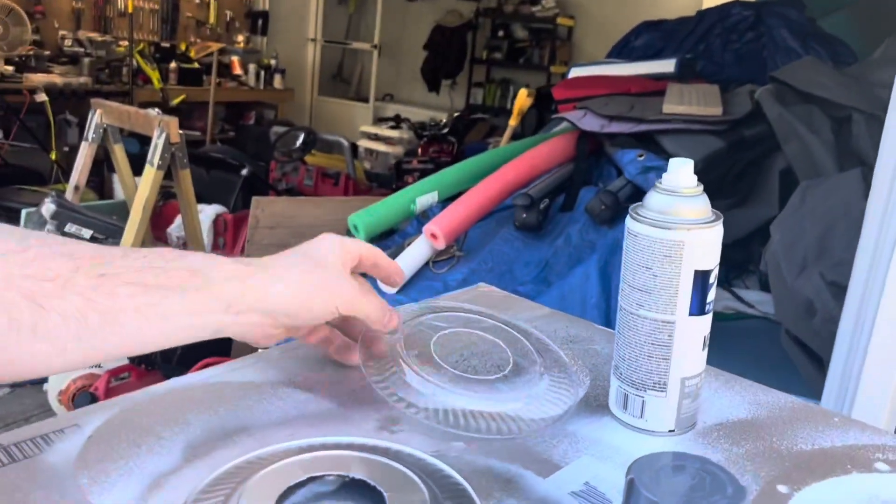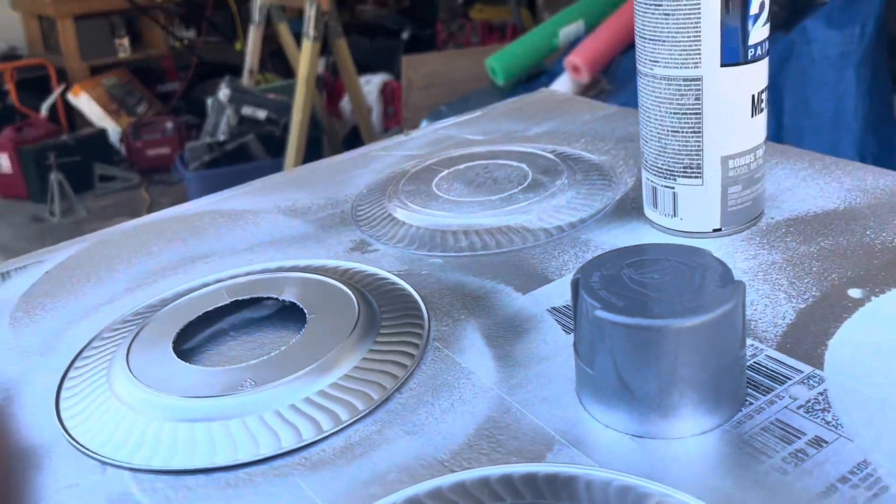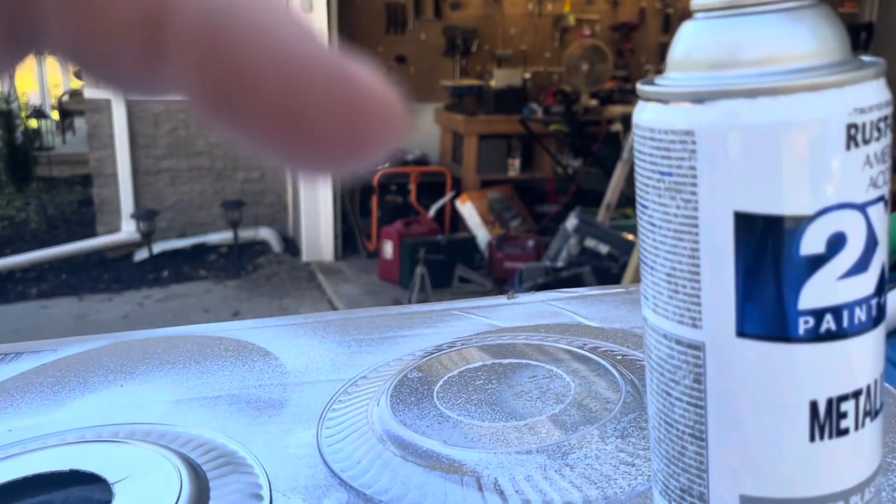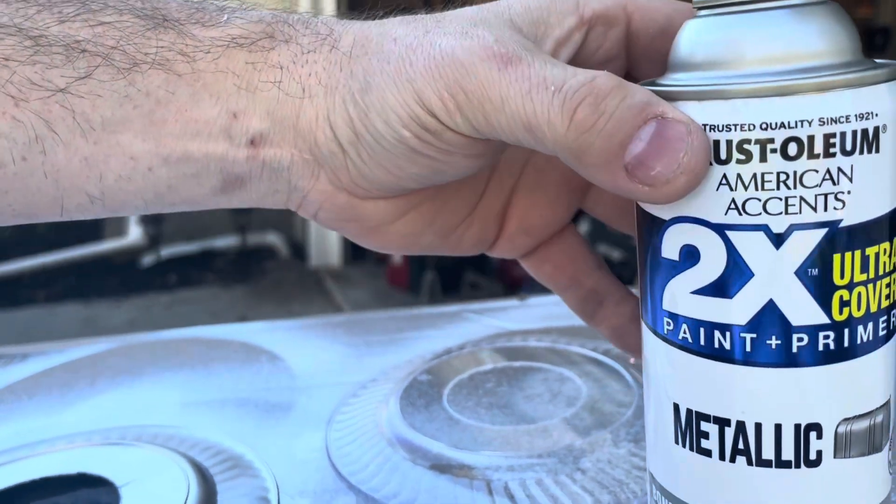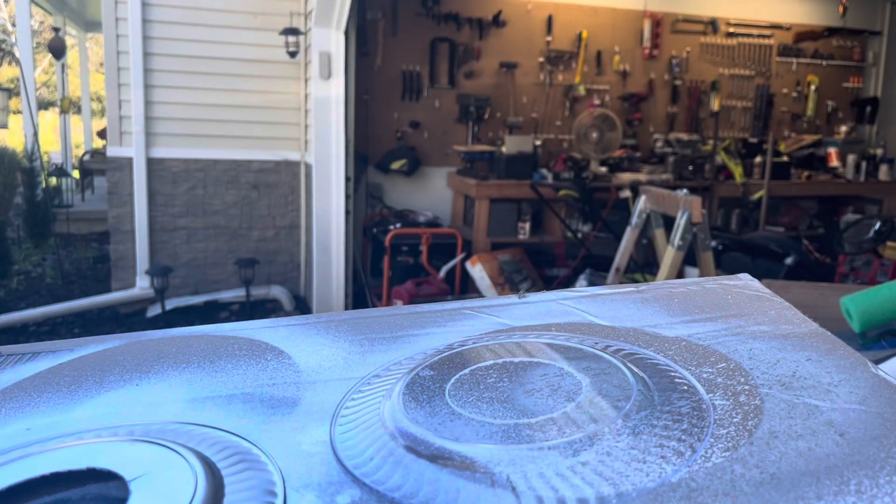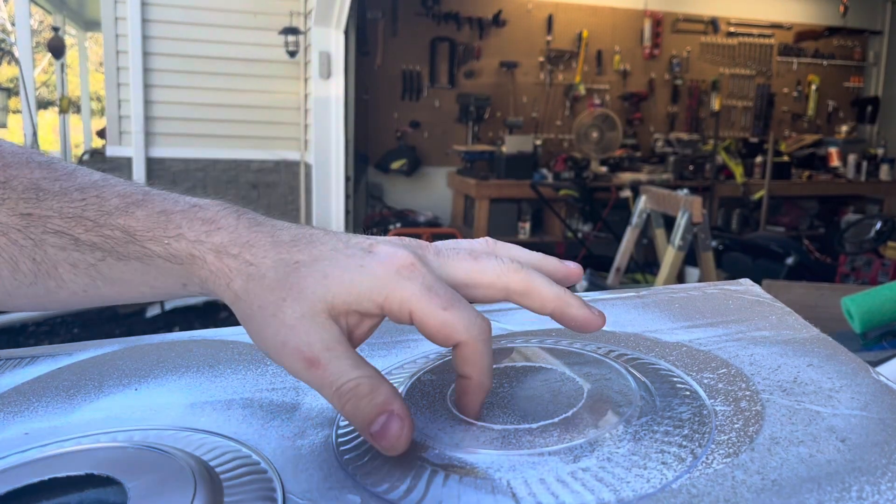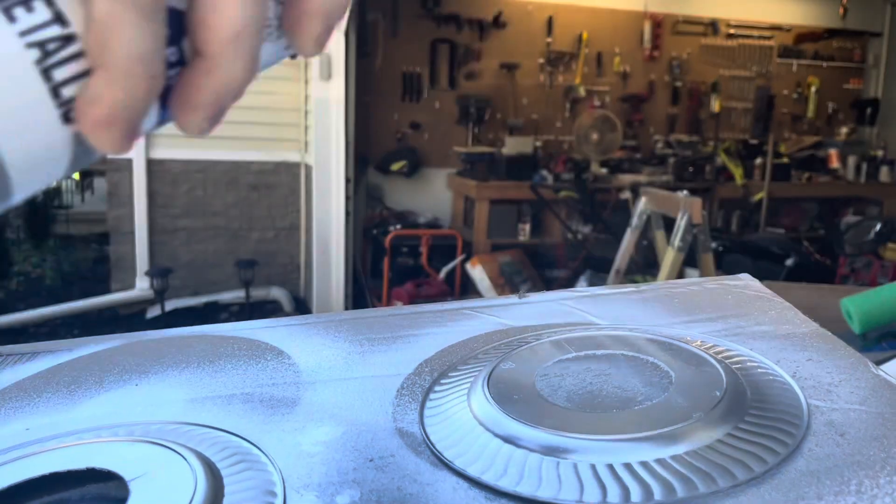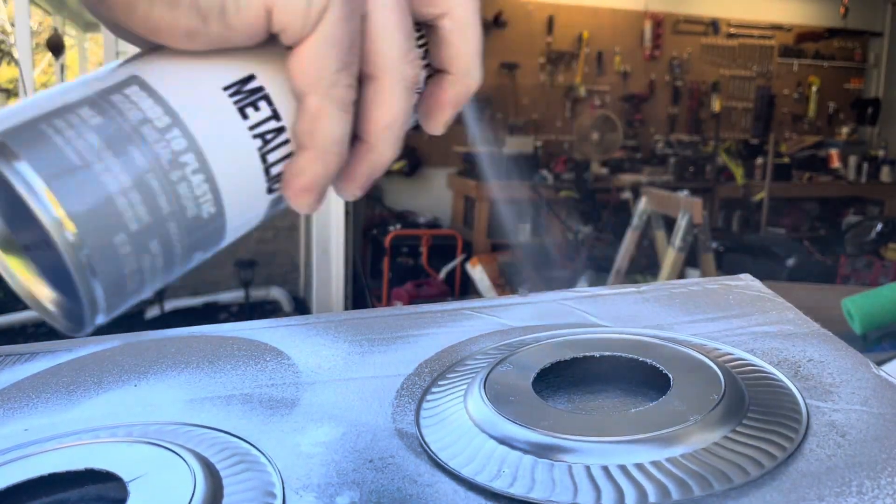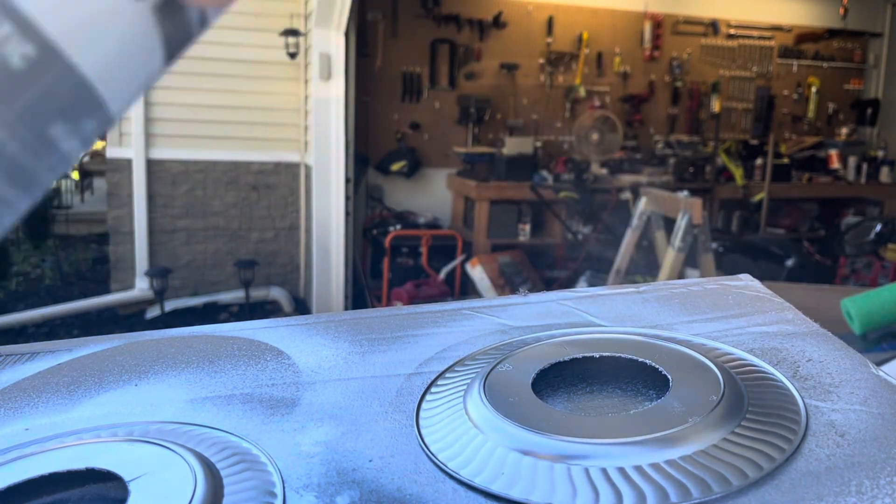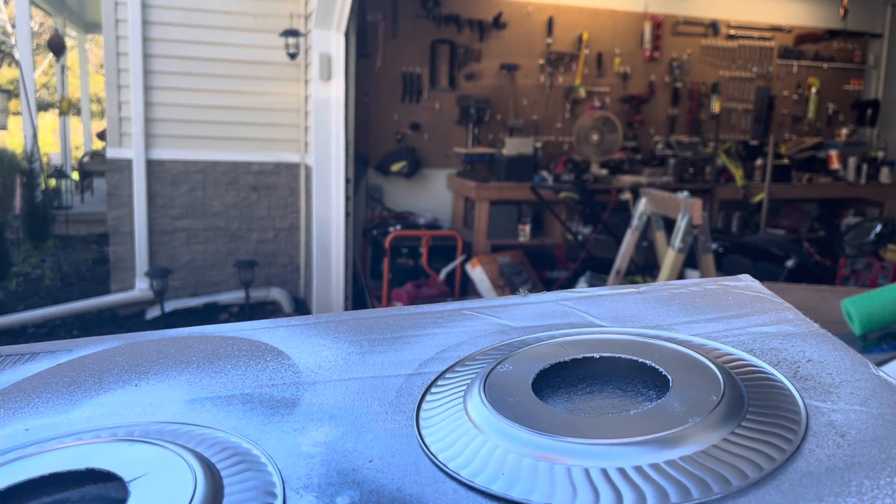Once you get it all cut up like this, you paint the outside like I have been doing here. And I'm just using Rustoleum metallic. Any good shiny metal looking paint will work. And you don't need a ton of paint, just coat it real well. Like so, and you're just going to repeat that a gajillion times.